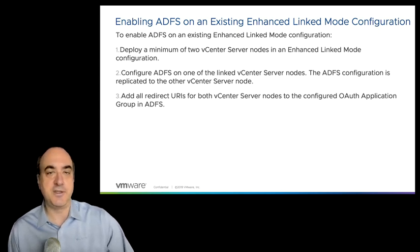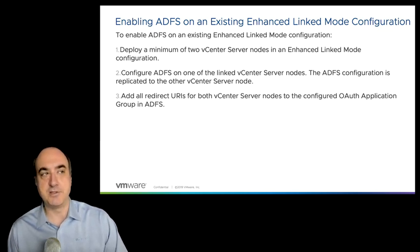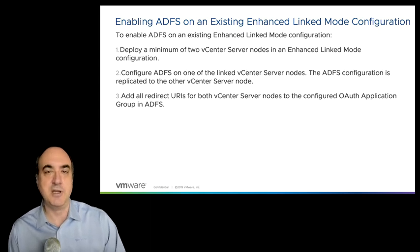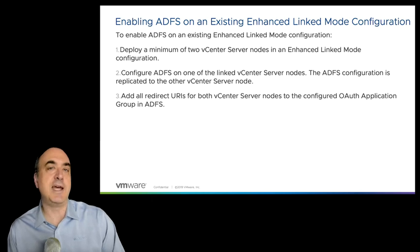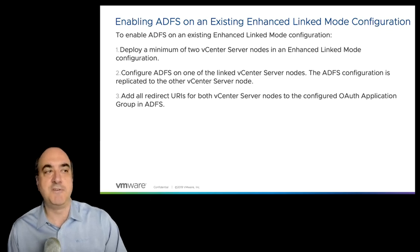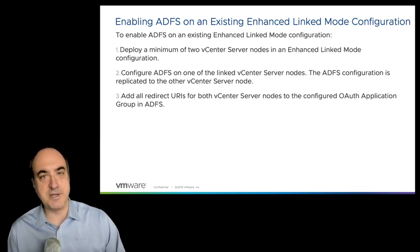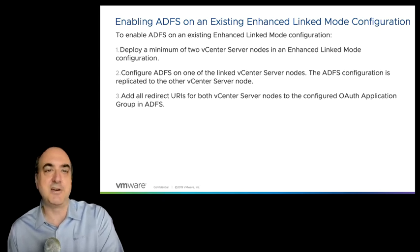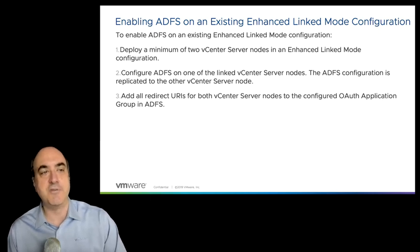If you have an existing enhanced link mode configuration and would like to enable ADFS, you'll need a minimum of two vCenter servers in enhanced link mode. Configure ADFS on one of the linked vCenter nodes, and the ADFS configuration will be replicated to the other vCenter system. Importantly, add all redirect URIs for both vCenter nodes to the configured OAuth application group in your ADFS environment, because if a user points their browser to the first or second vCenter, the redirect needs to come back to that specific vCenter.